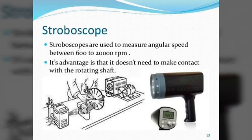Hello everybody, my name is Bridges Gond and welcome to my channel. Today we are going to discuss the stroboscope and its working with some figures. As shown in the first figure on your screen, stroboscopes are used to measure angular speed between 600 to 20,000 RPM, and its advantage is that it does not need to make contact with the rotating shaft.